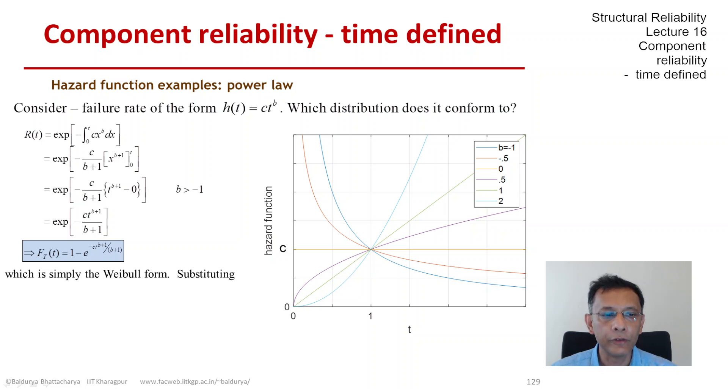For b and c, we substitute two quantities k and u. We substitute b+1 with k, and c over (b+1) we substitute with 1 over u to the power of k. That brings us to more familiar territories.